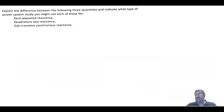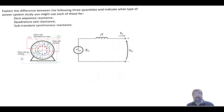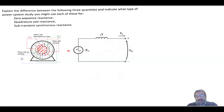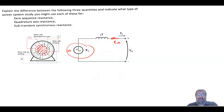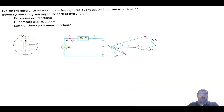The second quantity is the quadrature axis reactance. There are two different types of rotors in synchronous generators. The first is the round rotor, where the air gap between rotor and stator is uniform. The model for a round rotor has a voltage supply in series with the reactance, and optionally a resistance ra — this is the round rotor model.